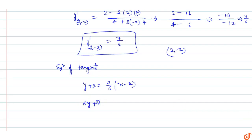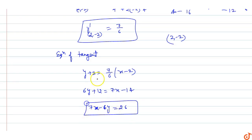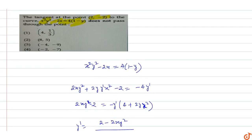Multiplying through: 6y + 12 = 7x - 14, which gives 7x - 6y = 26. This is the equation of the tangent. Now we check which given point does not lie on this tangent.